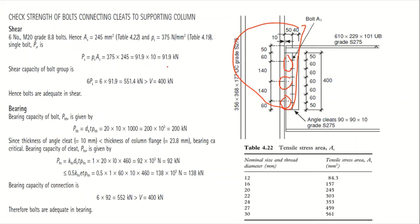First check: shear strength of the bolt group connecting cleat to column. From Table 4.22, shear strength ps = 375 N/mm² and shear area As = 245 mm², giving shear capacity per bolt of 91.9 kN. With six bolts, total shear capacity = 6 × 91.9 = 551.4 kN, which is greater than the applied load of 400 kN — safe.